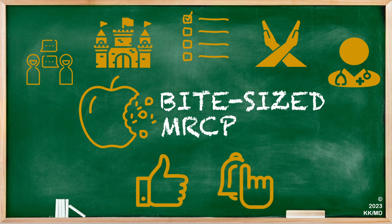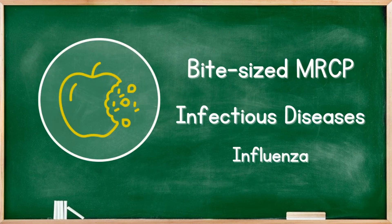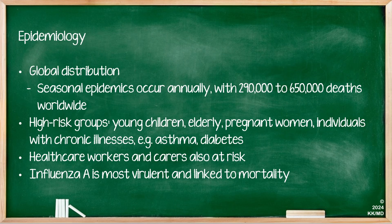Today's topic is influenza virus. The influenza virus or flu has a global distribution with seasonal epidemics occurring annually. The World Health Organisation estimates that this leads to approximately 290,000 to 650,000 deaths worldwide. High-risk groups include young children, elderly adults, pregnant women, and individuals with chronic illnesses including asthma or diabetes. Healthcare workers and carers are also at risk. Influenza A is the most virulent and most commonly linked to mortality.